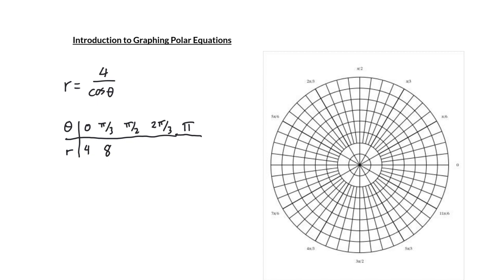Let's plot these two points and see where we are so far. So when theta is 0, I'm at a radius of 4, which would be right about here. Meanwhile, when theta is pi over 3, I'm at a radius of 8, which would be right about here. Let's continue and see what happens next.